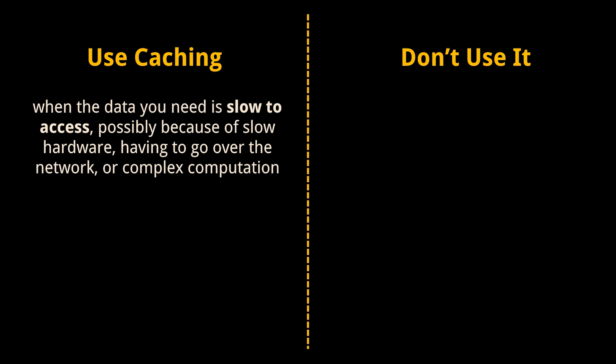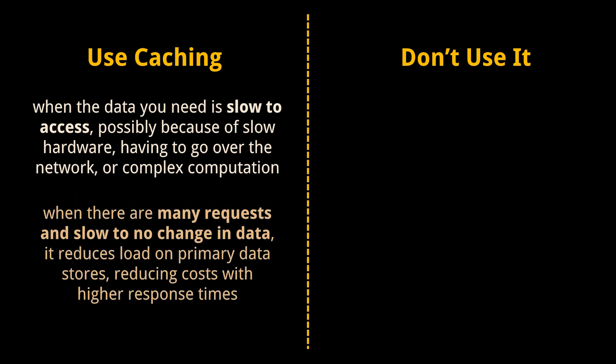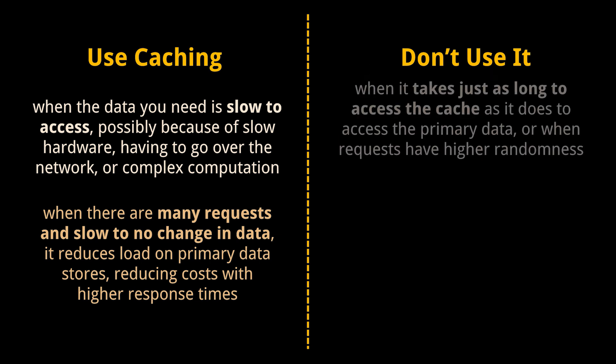Caching is most helpful when the data you need is slow to access — possibly because of slow hardware, having to go over the network, or complex computation. It is also helpful in systems where there are many requests and slow-to-no change in data, as it reduces load on primary data stores, reducing service costs with higher and more performant response times.